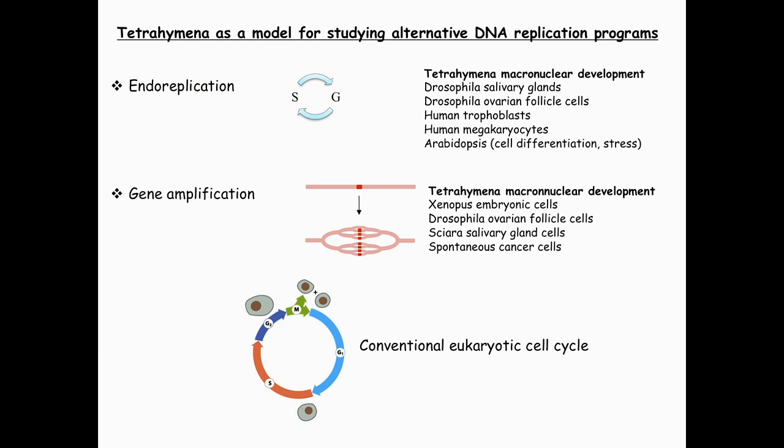In addition to studying these questions, one of the nice things about this model system is it provides the opportunity to study what I describe as alternative DNA replication programs. In a normal cell cycle, you replicate in S-phase, then segregate chromosomes and divide. But there are other programs, such as taking a diploid nucleus and generating a polyploid nucleus — called endoreplication. It's a genome-wide event occurring in many eukaryotes and typically associated with terminal differentiation. Another program is gene amplification, where a specific chromosomal segment is replicated to a higher copy number while others are not.